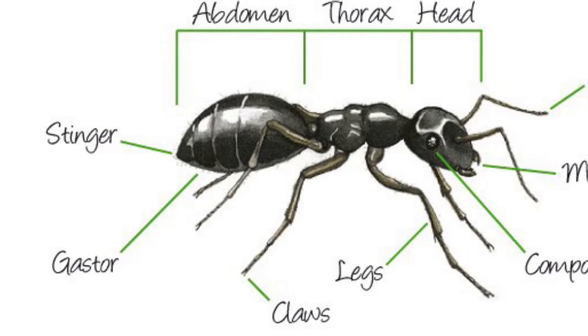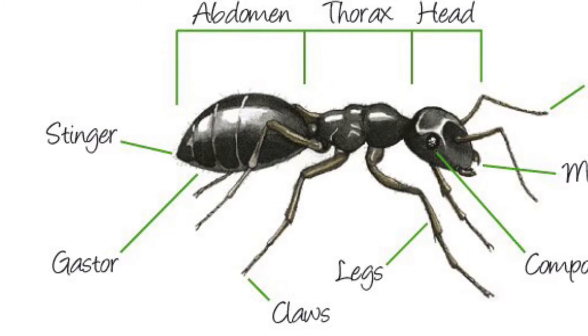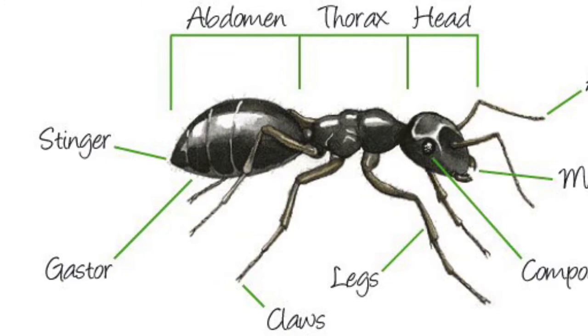I chose this insect, an ant, because kids have a lot of exposure to ants and might be curious about them. I chose this picture because it has the parts of the ant labeled. Remember that vocabulary piece we talked about?